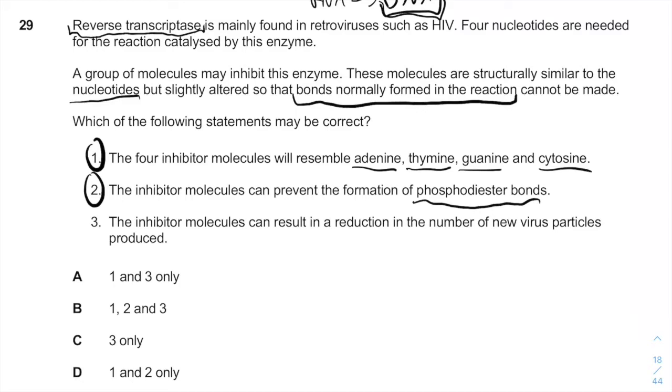The inhibitor molecules can result in the reduction in number of new virus particles produced. Eventually, when you can't make the DNA, the retro DNA from the RNA of the virus, it will result in the reduction of number of new virus particles because the virus protein cannot be made.